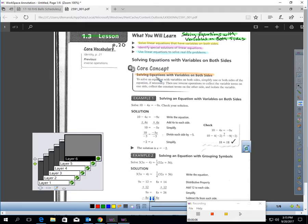When you solve equations with variables on both sides, there's an order that we have to do it in. The first step is to simplify one or both sides of the equation if necessary.